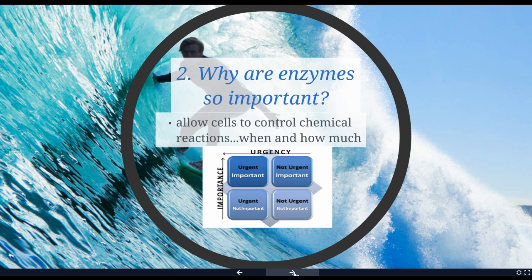There are chemical reactions that are urgent and important, like making sure your heart beats and you have enough energy in your muscles to get up and walk around. Then there are things that are not as urgent, like the protein in your hair and whether it makes it curly or straight. So we have some enzymes that are really essential, others not so much, and some in between.